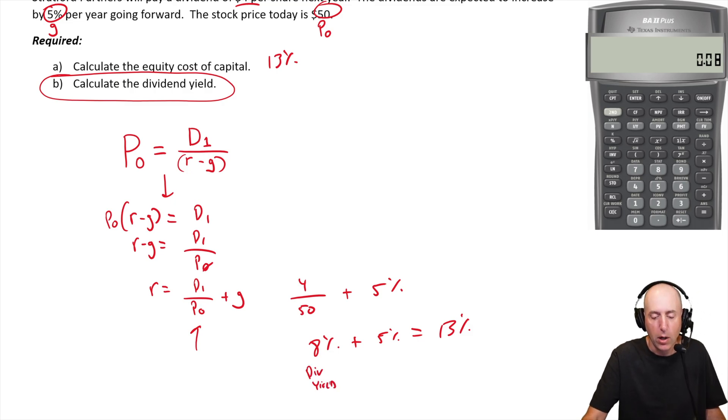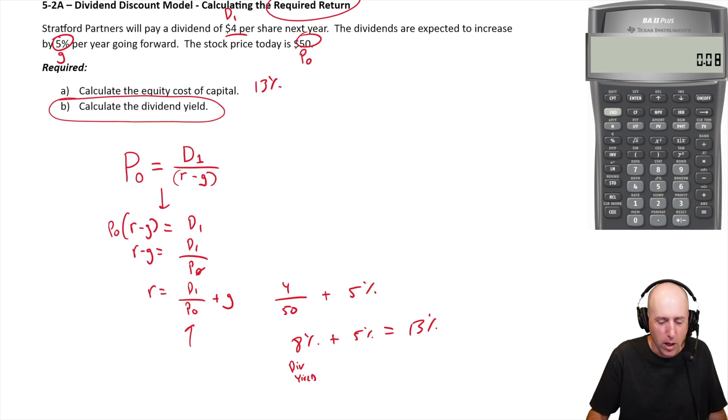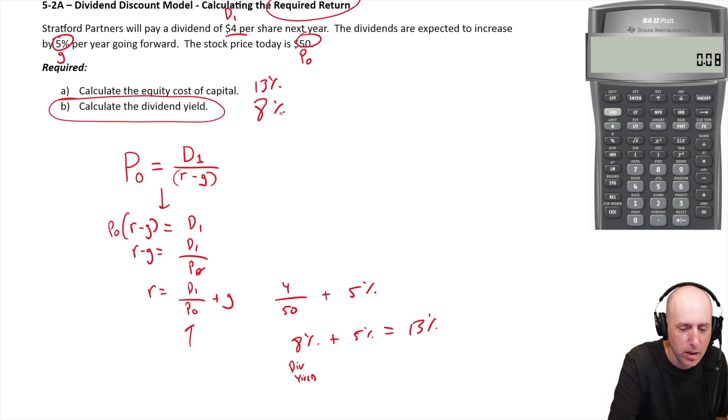What's the other 5%? And the other 5% is our capital gains. It's how much we're expecting or requiring of capital gains growth in the stock value. So it sort of deconstructs into two pieces here, but the answer to the second part, what's our dividend yield, our dividend yield is 8%. And again, the other component here is capital gain, how we expect the stock price to grow. So that's that 5%.